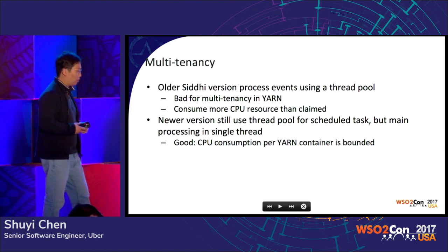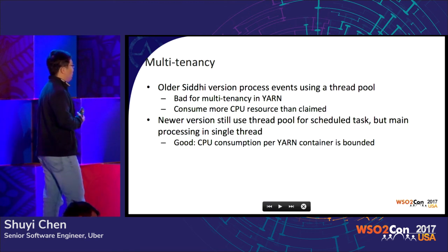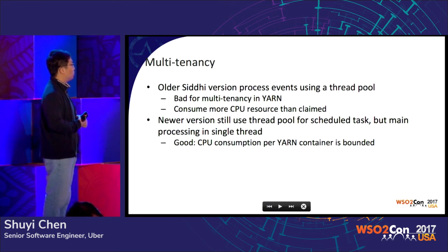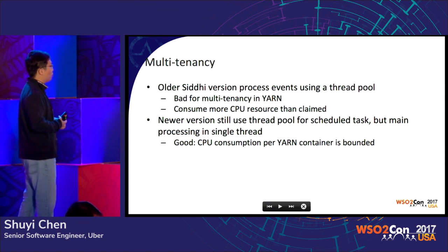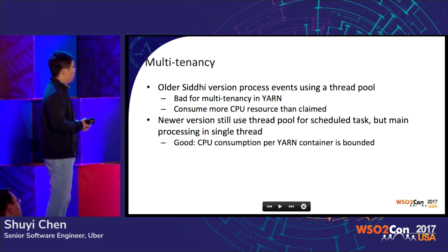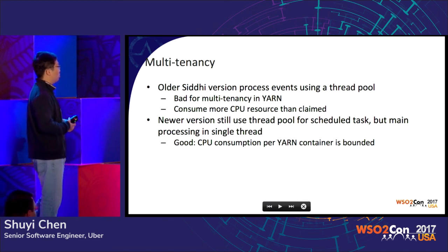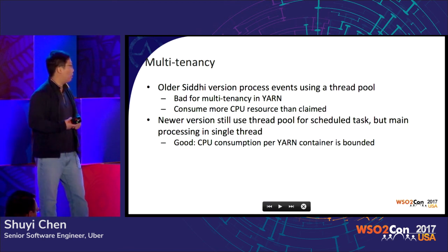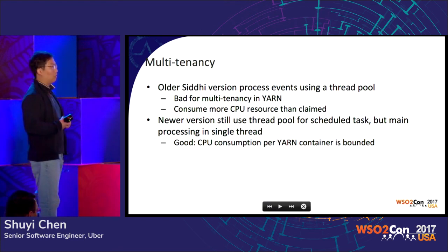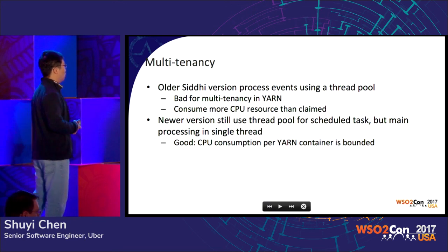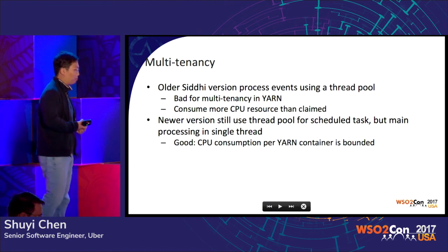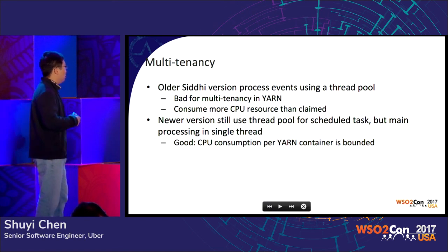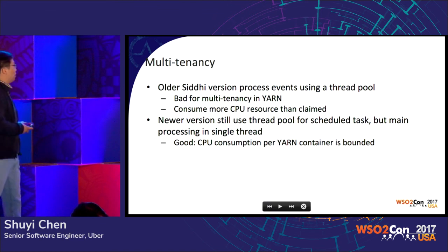Another challenge is multi-tenancy. The older Siddhi version processed events using a thread pool — I remember the version we used before had a thread pool of about 128 threads. This is bad for multi-tenancy in YARN because there's no bound on how much CPU it can consume per container. The good news is the new version uses a single thread for main processing, though scheduled tasks still use a thread pool. Overall, this performs really well, and now CPU consumption per YARN container is bounded, so when we run multiple jobs in the YARN cluster, they are all happy.